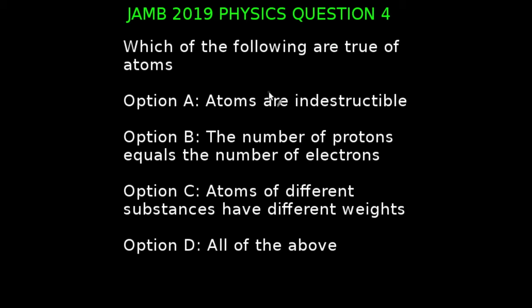JAM 2019 physics question number 4. Which of the following are true of atoms? In this question, all of the options we have are properties of atom, so the answer to this question is option D, which is all of the above.